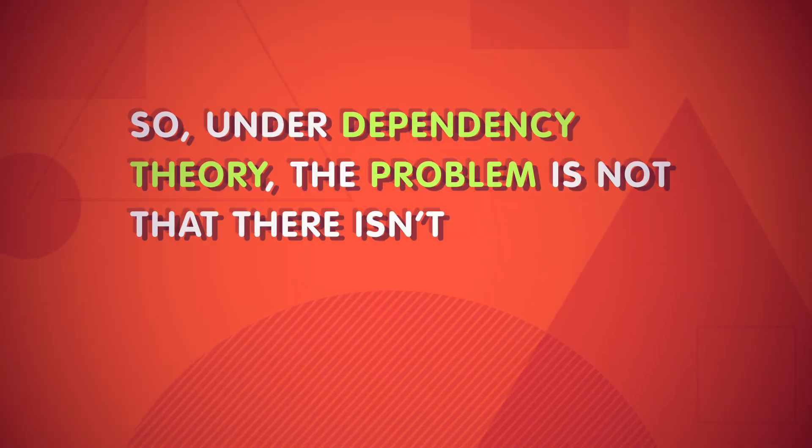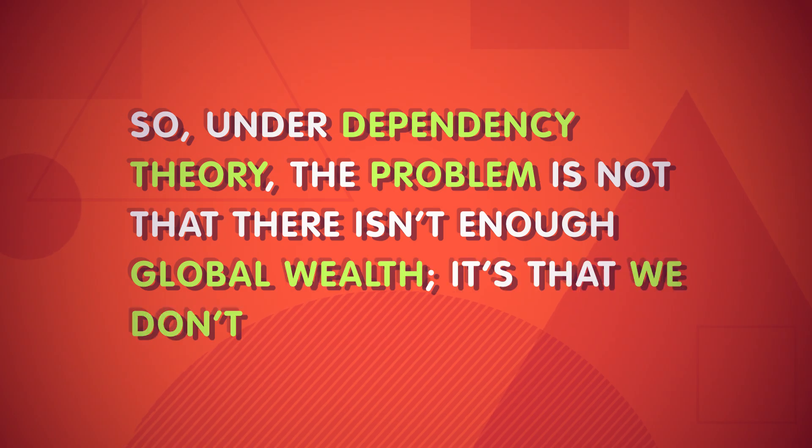First, poor nations tend to have few resources to export to rich countries, but corporations can buy these raw materials cheaply and then process and sell them in richer nations — as a result, the profits tend to bypass the poor countries. Poor countries are also more likely to lack industrial capacity, so they have to import expensive manufactured goods from richer nations. And all of these unequal trade patterns lead to poor nations owing lots of money to richer nations, creating debt that makes it hard to invest in their own development.